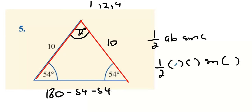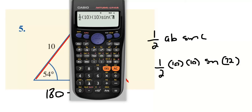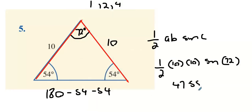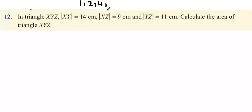So it's going to be one half times 10 times 10, and remember the angle in between the two tens is the 72. So it's one half times 10 times 10 sine 72, and you get 47.55 centimeters squared.